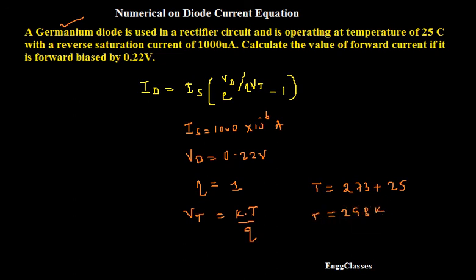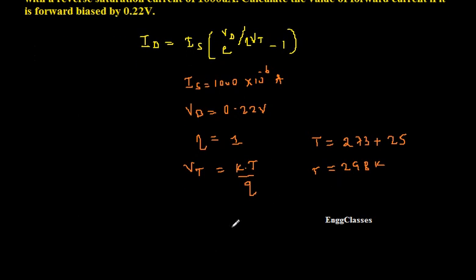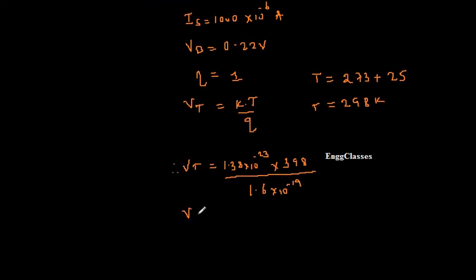Therefore VT equals k, the Boltzmann constant 1.38 into 10 to the power minus 23, multiplied with 298 as the temperature, divided by the charge of the electron 1.6 into 10 to the power minus 19. If you do that, we get VT equal to 0.0257.